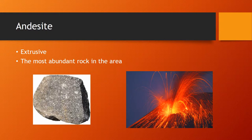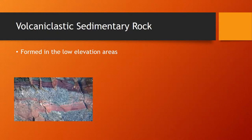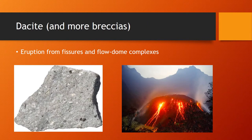Here you can see pictures of andesite and a cool volcanic eruption. After the effusive eruptions created lots of andesite and breccias, over time they started to form volcaniclastic sedimentary rocks. This volcaniclastic sedimentary rock mostly formed in the low topographic areas.